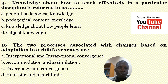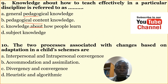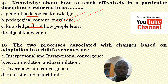Number nine: Knowledge about how to teach effectively in a particular discipline is referred to as — A: general pedagogical knowledge, B: pedagogical content knowledge, C: knowledge about how people learn, D: subject knowledge. The correct answer is pedagogical content knowledge.